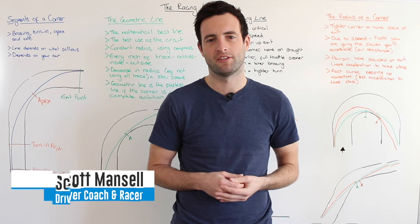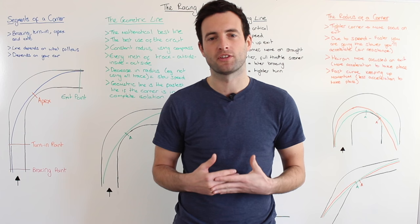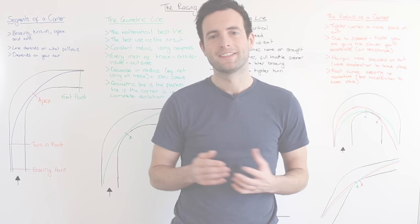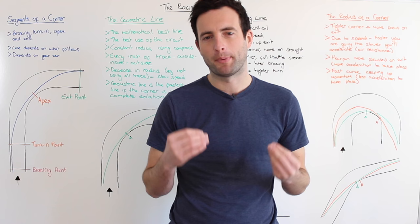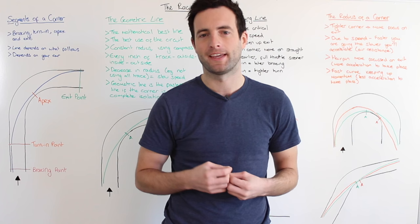I'm Scott Mansell and welcome to Driver 61's University Series. This series is a collection of whiteboard tutorials taking you from the very basics of circuit driving to more advanced theories later on. Today we're going to take a look at the most basic of theories you need to know for circuit driving — what is the racing line and why we take a specific line through a corner.